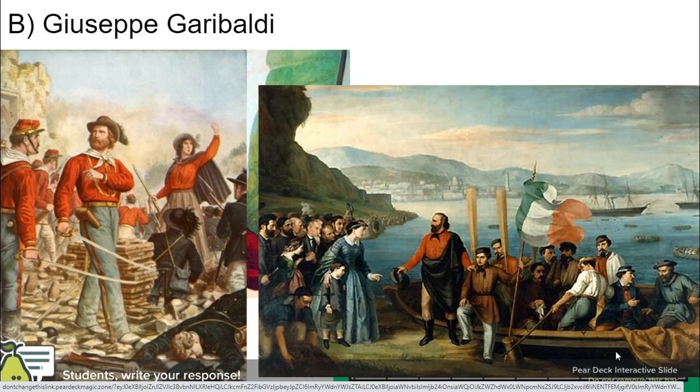Garibaldi and his followers, known as the Red Shirts on account of the red shirts they wore, were able to first take the island of Sicily and then launch an assault on the mainland. These peasant armies were incredibly effective and helped complete the unification of Italy by solidifying control of the southern part of the Italian peninsula.